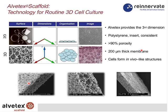The Alvatex scaffold is engineered into a 200 micron thick membrane. At higher magnification you can see how porous the material is. In cross-section with cells fully colonizing it, those pores are no longer visible because they are full of cells — creating a miniature slab of tissue inside the culture dish.